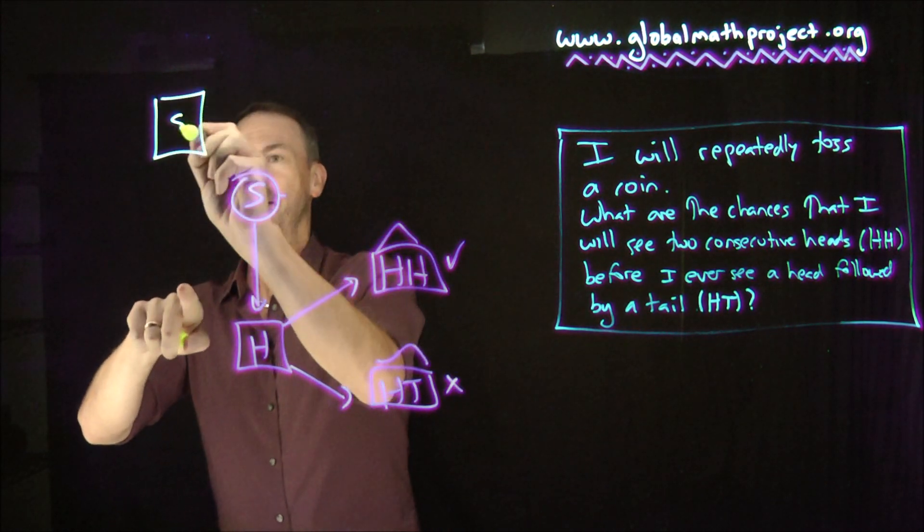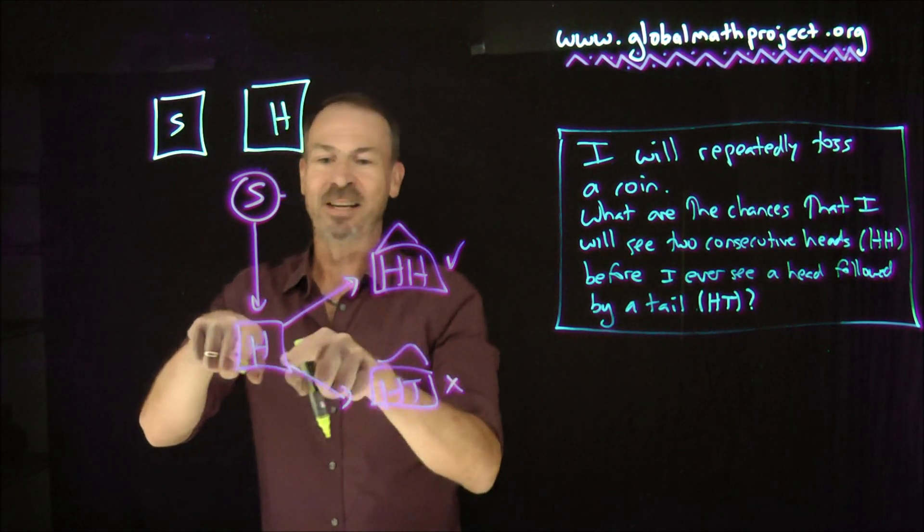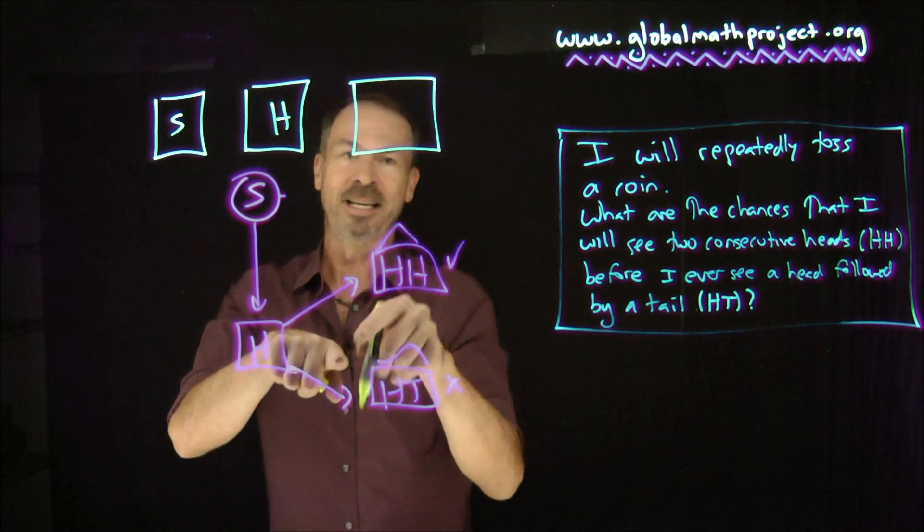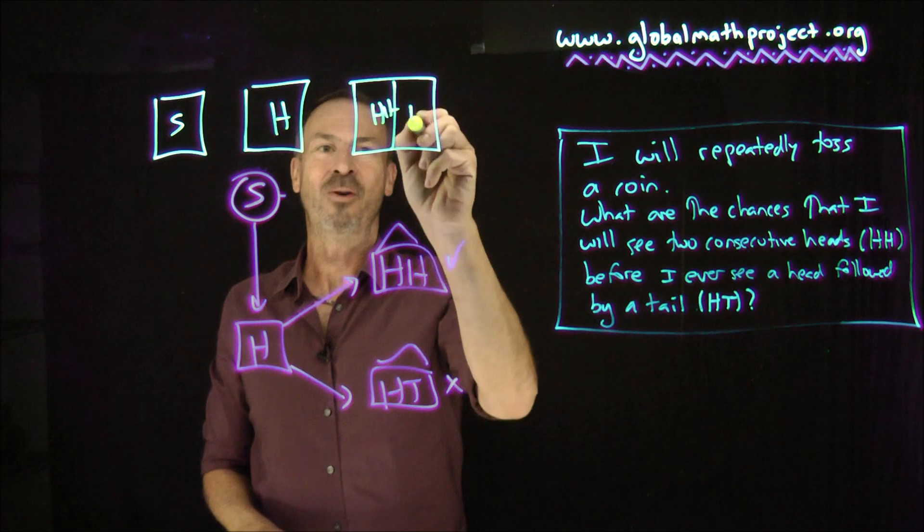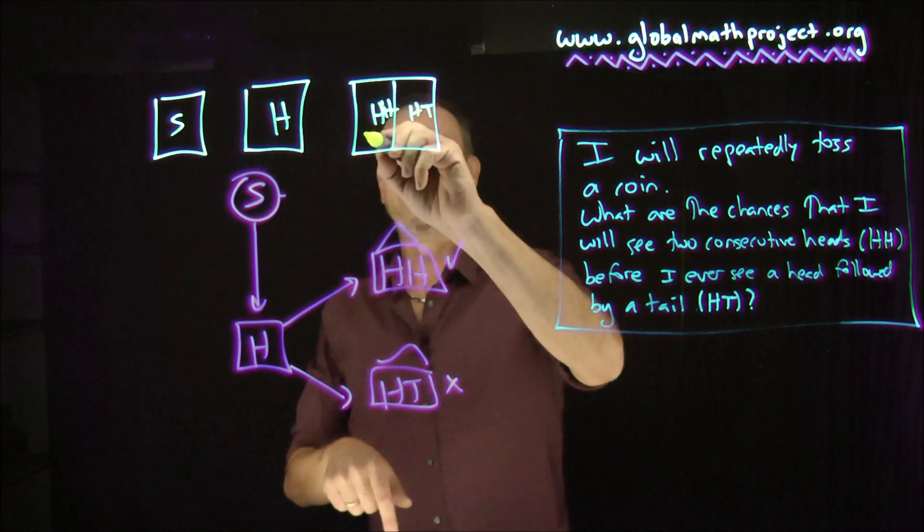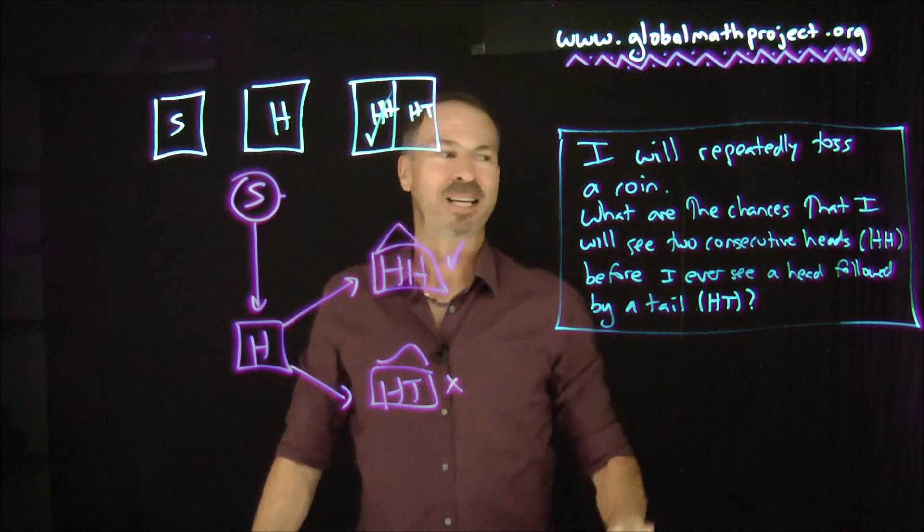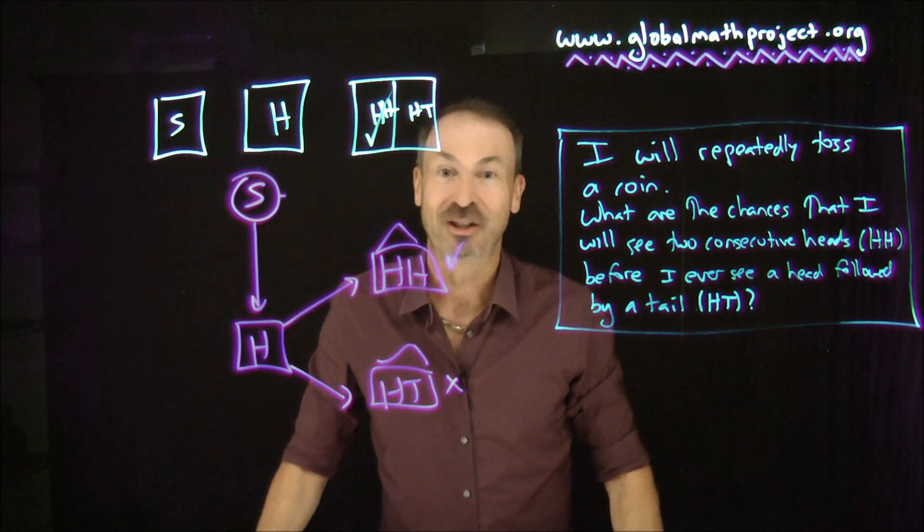Which is straightforward because I could draw the area model for this. Everyone starts in start. After one iteration, everyone moves to getting a head, and after the next iteration, everyone moves to splitting to half, either head-head or head-tail, and bingo! 50% of the people get that first, 50% of the people don't get that first, in which case the answer is 50%, just as we said before.